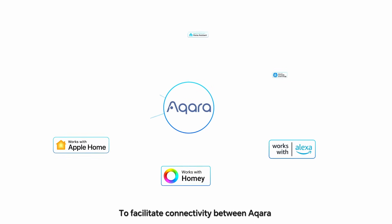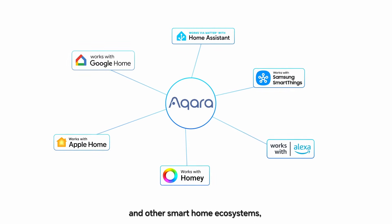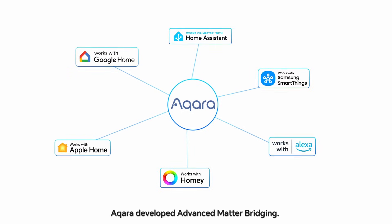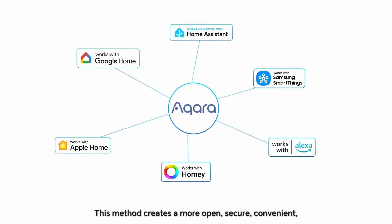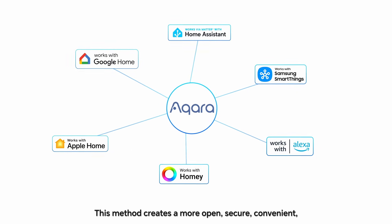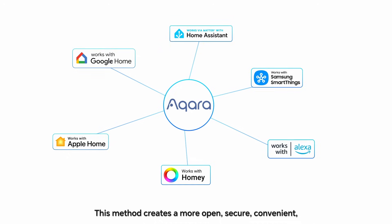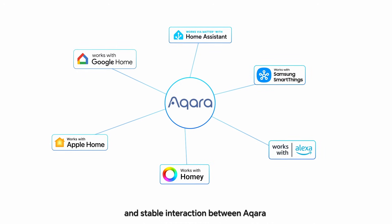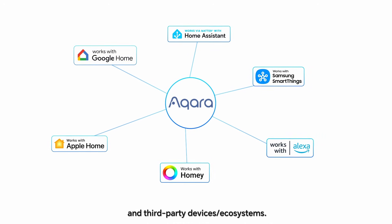To facilitate connectivity between Aqara and other smart home ecosystems, Aqara developed Advanced Matter Bridging. This method creates a more open, secure, convenient, and stable interaction between Aqara and third-party devices or ecosystems.